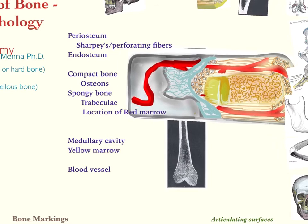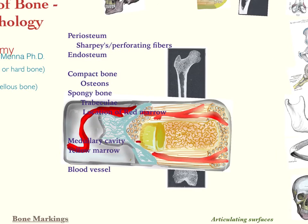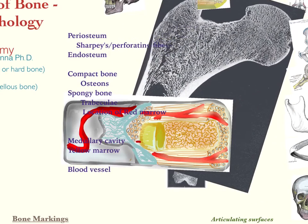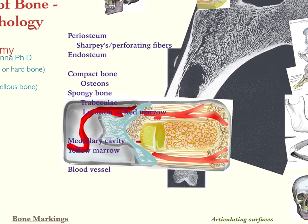Another membrane you need to know about is the endosteum. Endo — think of it as on the inside. This would be on the interior portion of the bone. In this case it's showing what we'll learn to be the medullary cavity. So if you were looking at actual photos of bone, you'd see it lining those internal components. That's a different type of membrane.